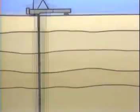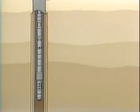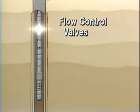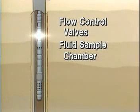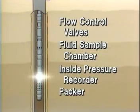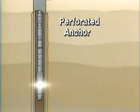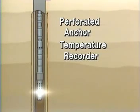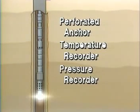In their simplest form, the drill stem test tools run on either drill pipe or tubing, and consist of flow control valves, a fluid sample chamber, an inside pressure recorder, one or more packers to isolate the zone being tested, a perforated anchor for fluid to enter the tool string, a temperature recorder, and a pressure recorder.